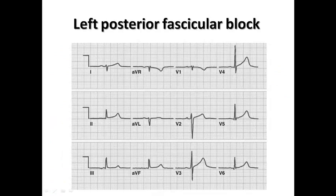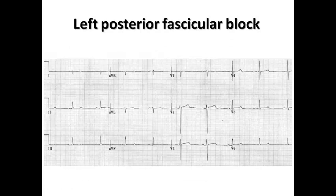Here is an example of left posterior fascicular block. Predominantly positive complexes in leads II, III, and AVF with predominantly negative complexes in leads I and AVL — right axis deviation. There is no right bundle branch block here; it is isolated right axis deviation caused by left posterior fascicular block. In another example, we can similarly find predominantly positive complexes in II, III, and AVF and predominantly negative in I and AVL, with slight prolongation of complex duration.